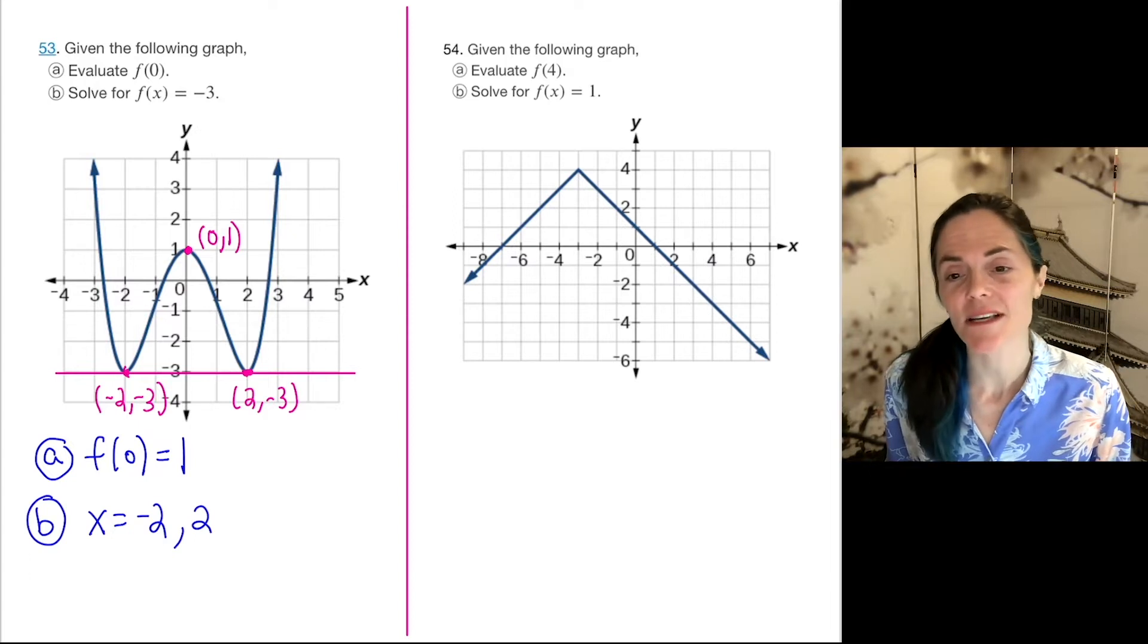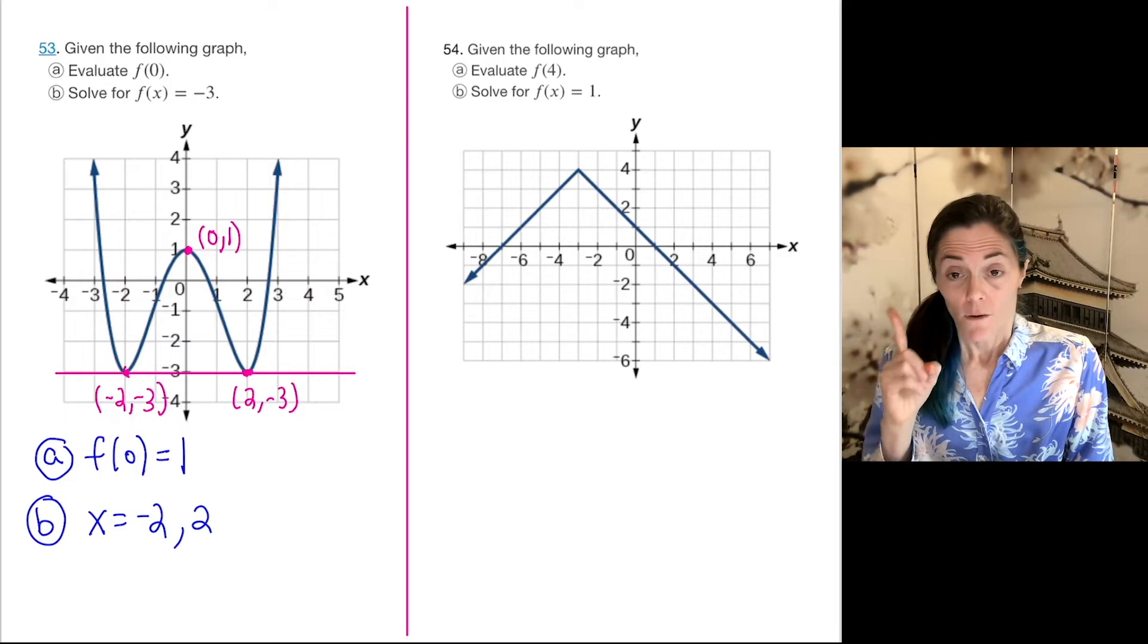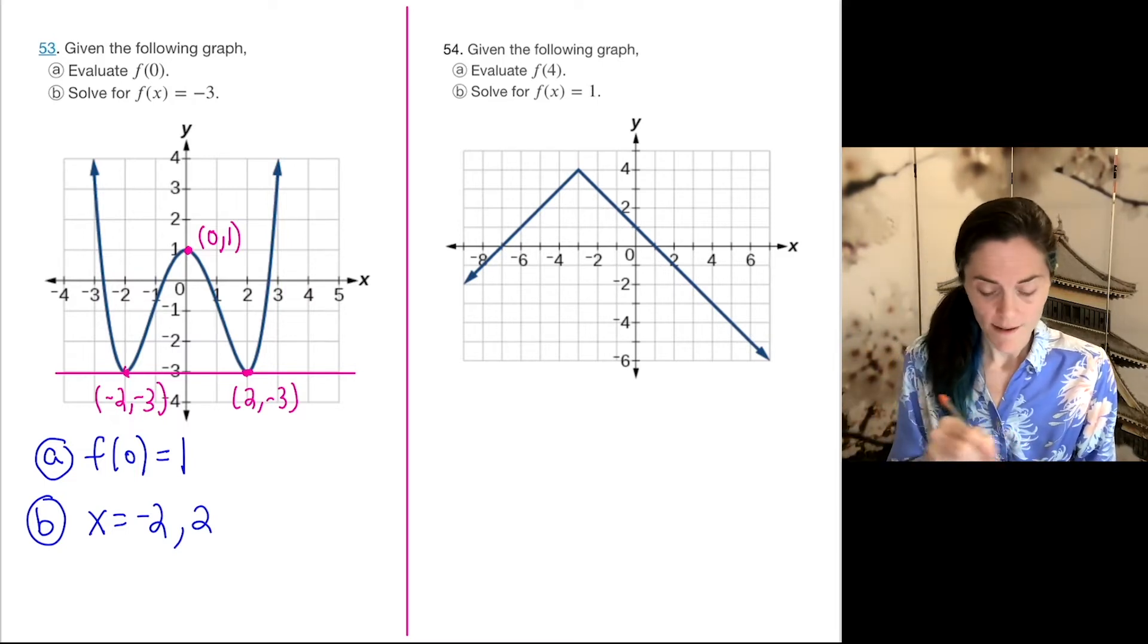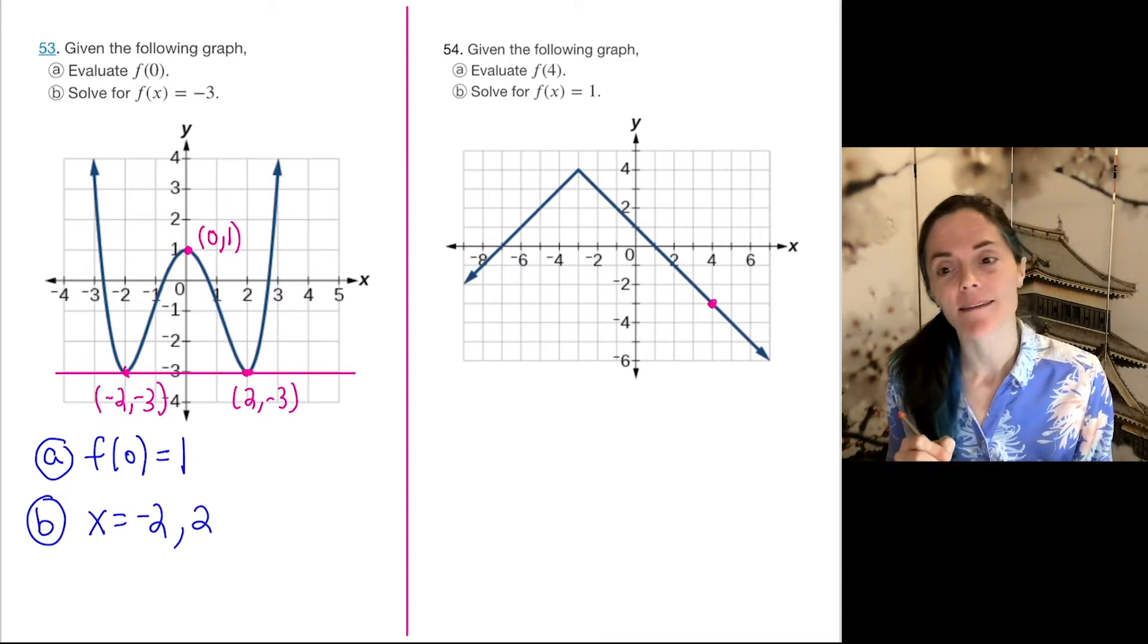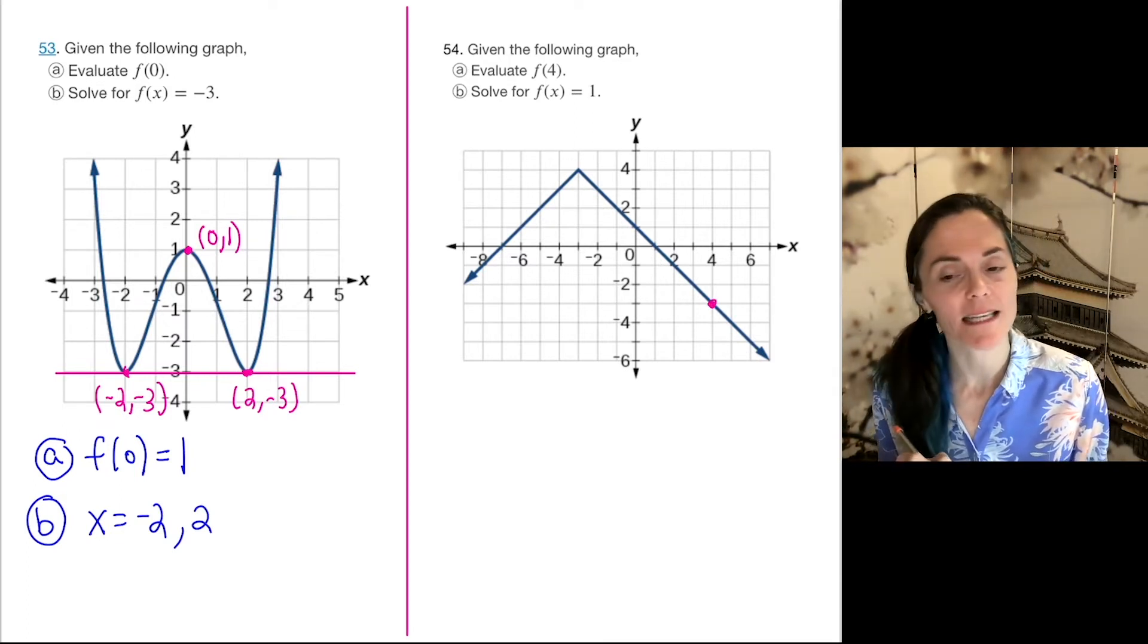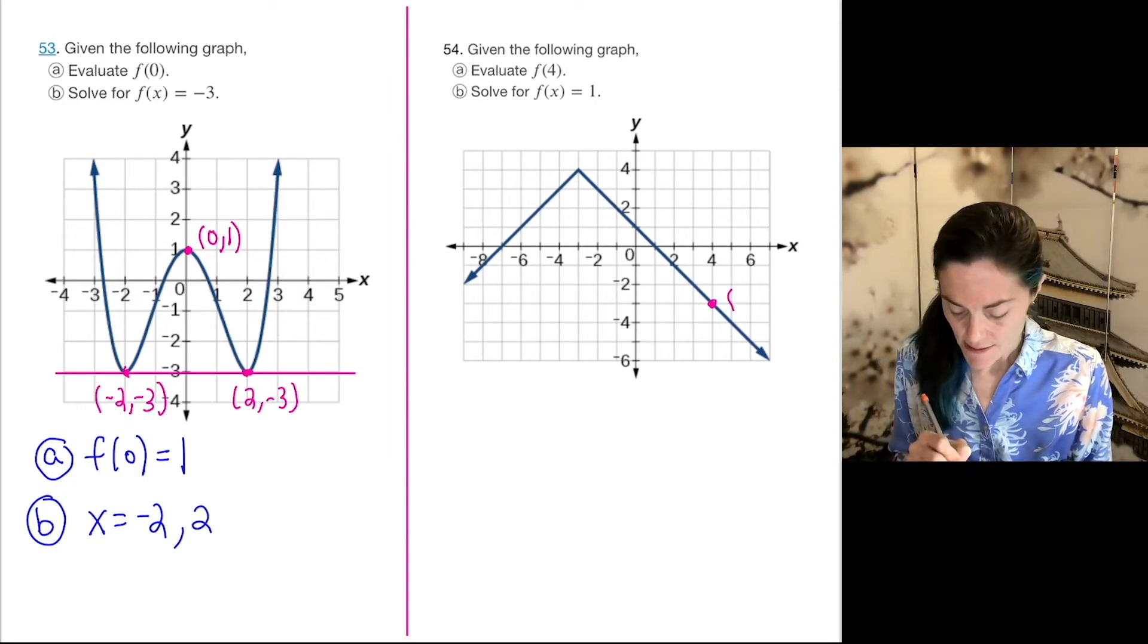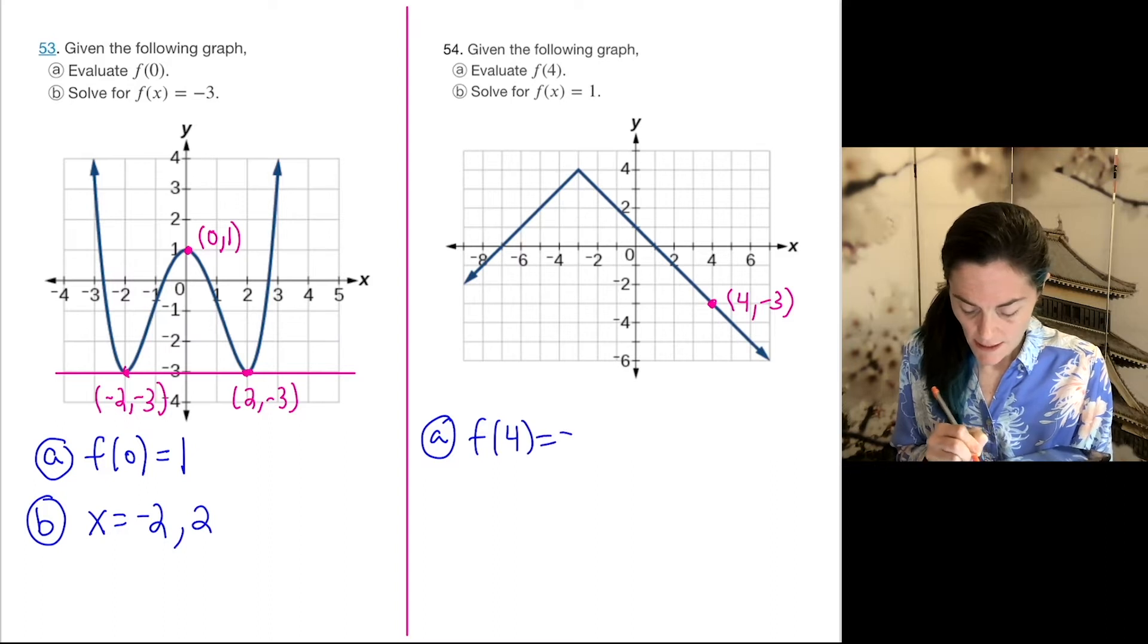54 is very similar, we just have a different function. First one, evaluate f(4). There's the point on the graph and we can see it with the tick marks. It's 4 comma negative 3. This is 4 comma negative 3. And so letter a, this tells us f(4) is negative 3.